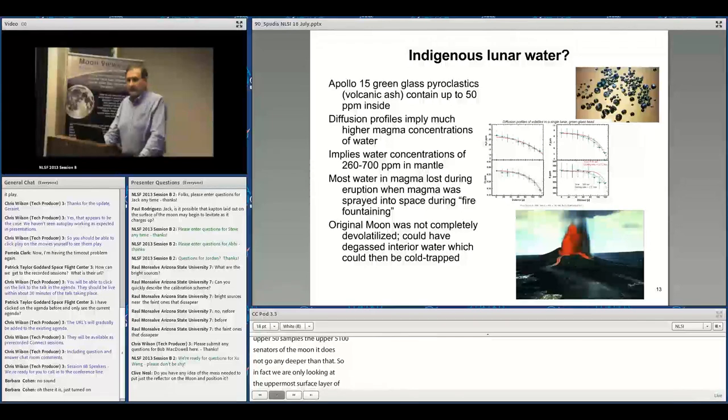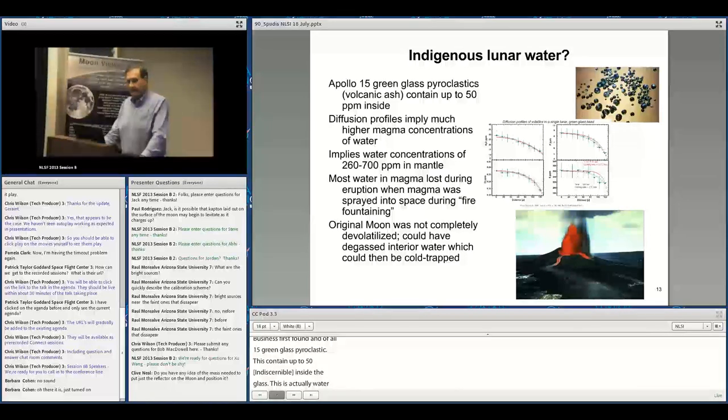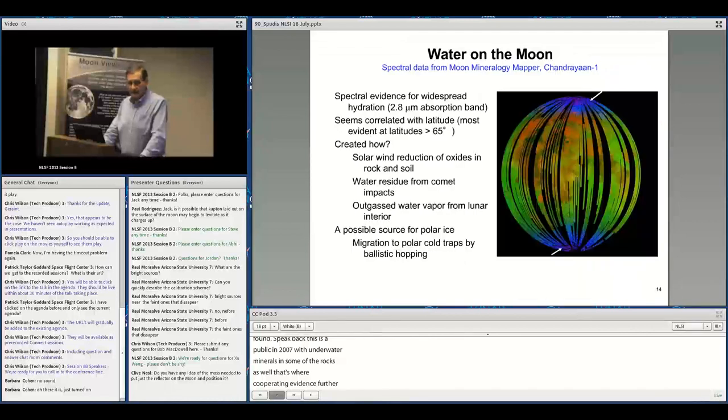One big surprise was discovery of indigenous lunar water in Apollo 15 green glass pyroclastics, containing up to 50 parts per million. This isn't surface correlated water but water that was in the magma. From concentrations and diffusion profiles, it implies the source rocks in the mantle had 250 to 700 parts per million. The green glass is extremely primitive magma from very deep, deeper than 400 kilometers, meaning the mantle contains significant water.